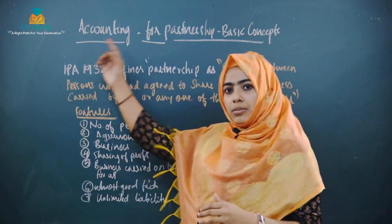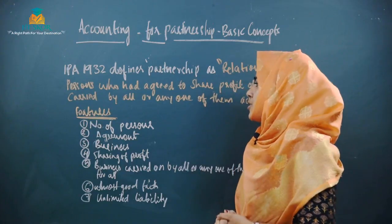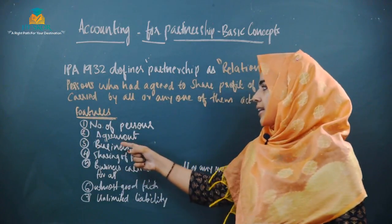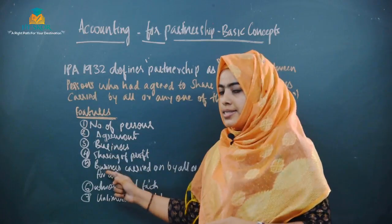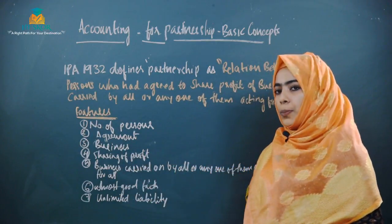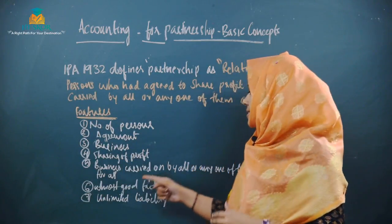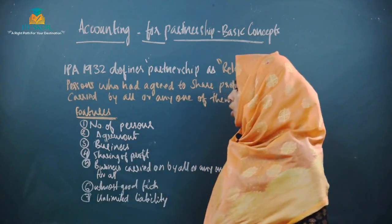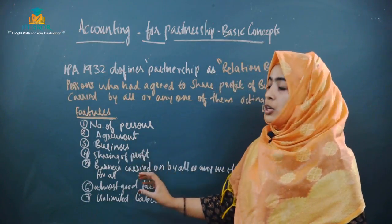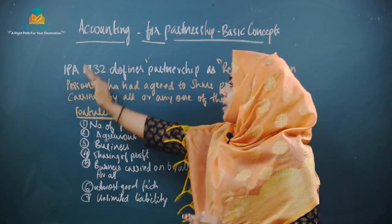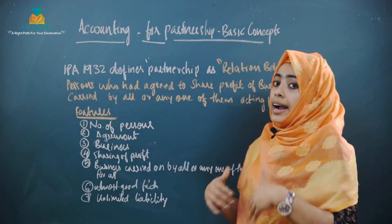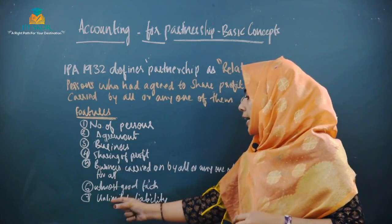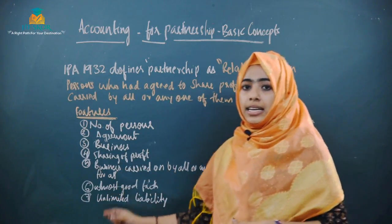The five features from the definition are: first, number of persons; second, agreement; third, business; fourth, sharing of profit; fifth, business carried on by all or any one of them acting for all. Additionally, two more features are: utmost good faith, and unlimited liability.